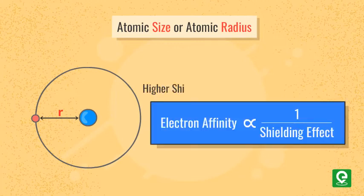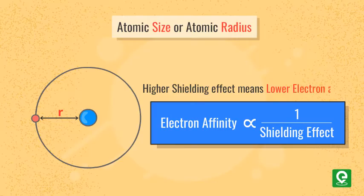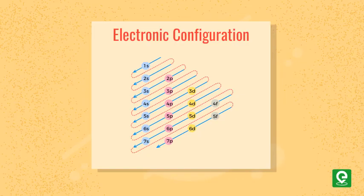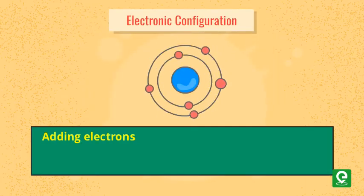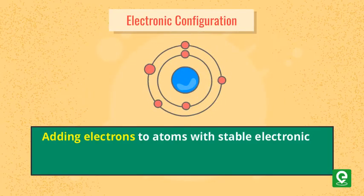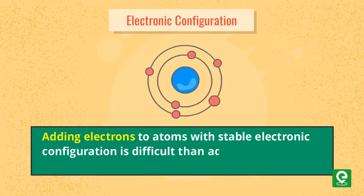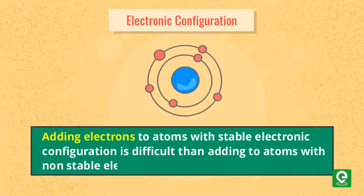Also, shielding effect is directly proportional to atomic size, and atomic size is inversely proportional to electron affinity. Electronic configuration: adding electrons to atoms with stable electronic configuration is difficult than adding to atoms with unstable electronic configuration.